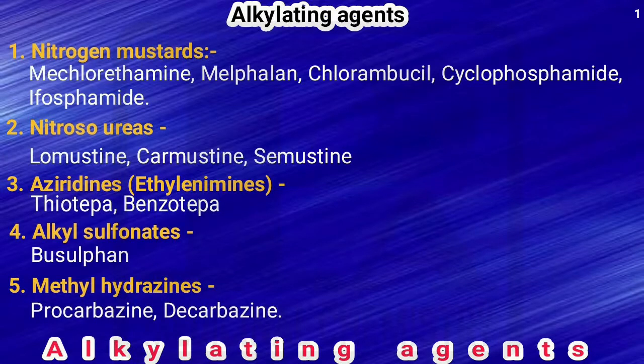This is the first class on anti-neoplastic agents. We have already known the classification of anti-neoplastic agents: they are classified as alkylating agents, anti-metabolites, antibiotics, plant products, enzymes, hormones, and monoclonal antibodies. Now we'll see them one by one.